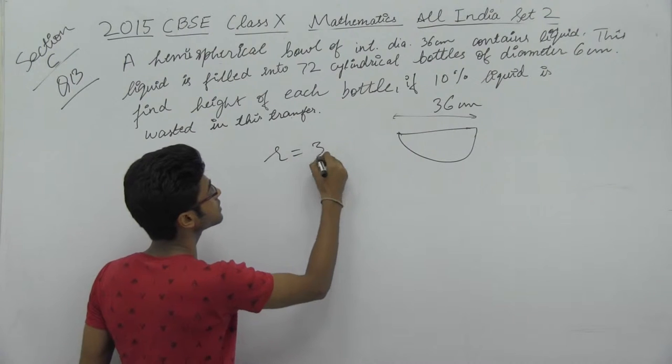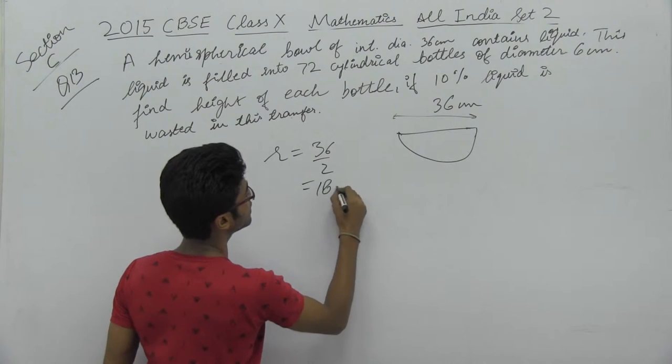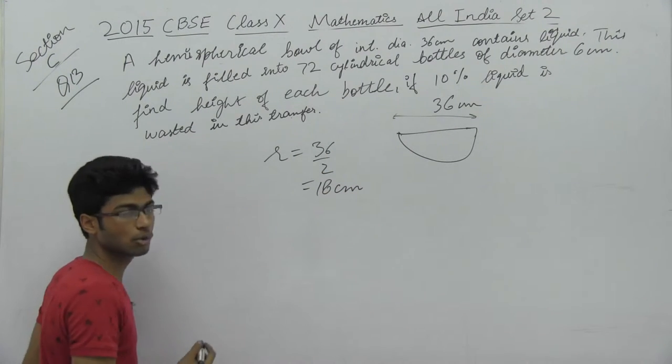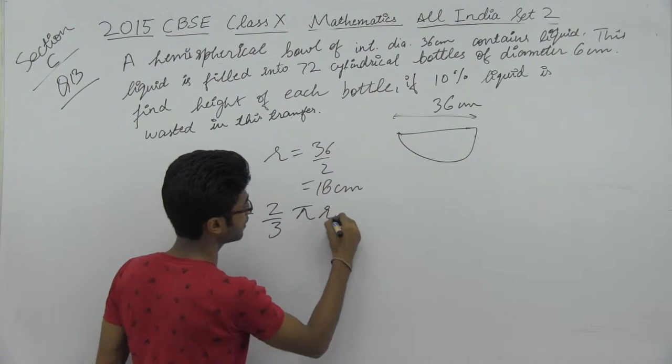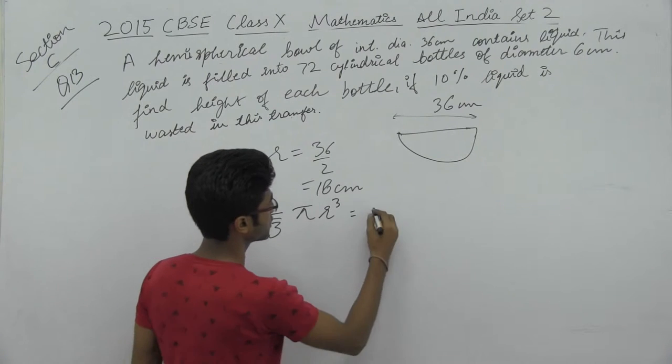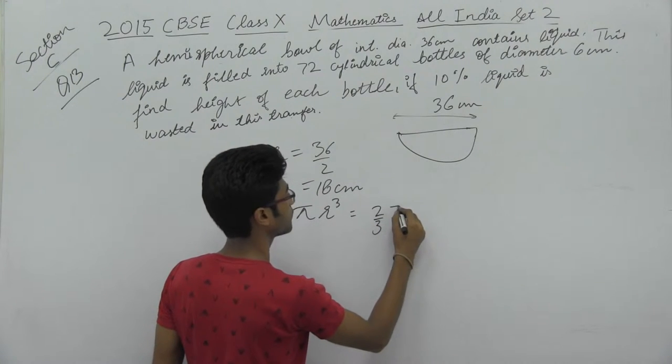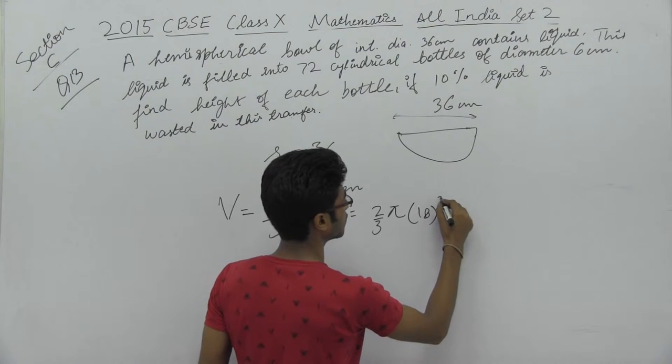The radius will be 36 divided by 2, which is 18 cm. We know that the volume of a hemisphere is 2/3 πr³. This will be 2/3 × π × (18)³.